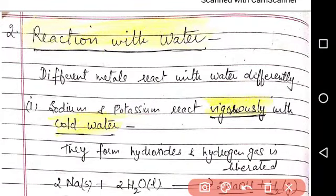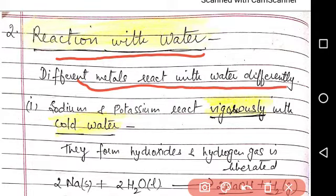So first is reaction with water. Different metals react differently with water. It means in the reactivity series, the metals which are placed at the top like sodium and potassium, they can react very vigorously even with cold water.